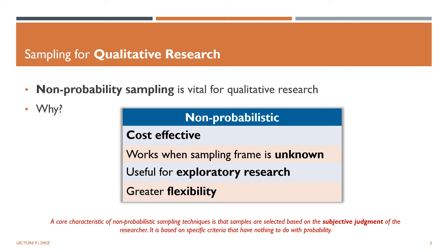In applied social science research, there may be circumstances where it is not feasible, practical, or theoretically sensible to do random sampling. And poor response from a probabilistically selected sample is not much good either. Hence, researchers have also resorted to non-probability methods.